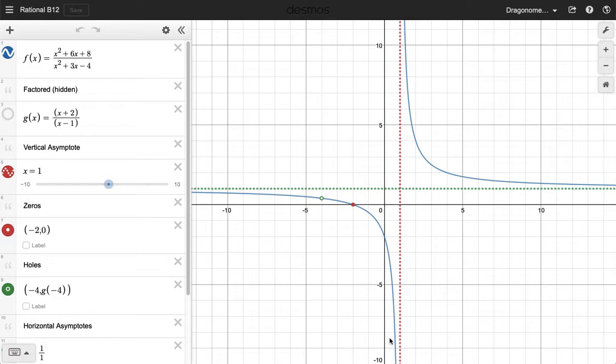We've completed an assignment where we identified each of those features for 14 different functions. This happens to be the information for problem number 12 on that assignment. For that assignment, we were given the function x squared plus 6x plus 8, over x squared plus 3x minus 4.